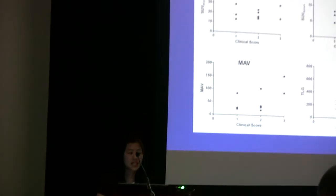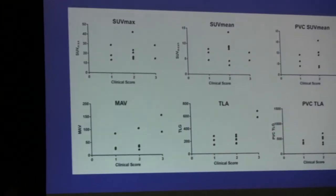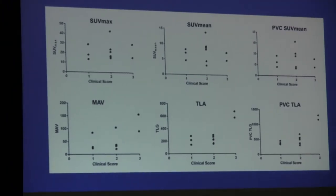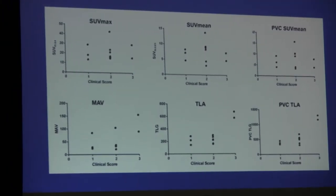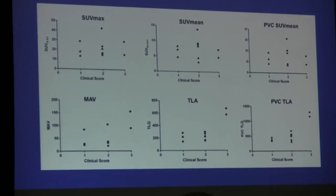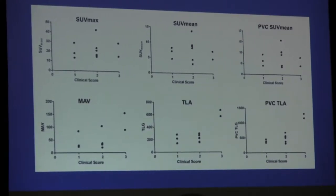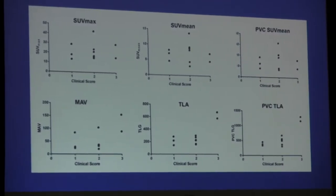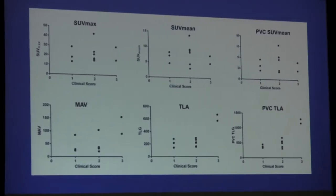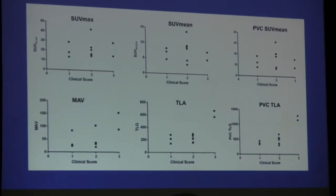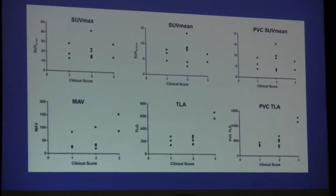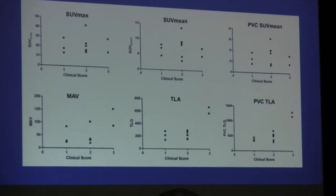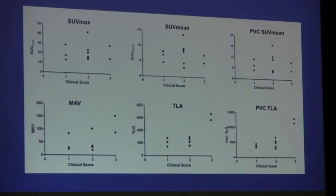Our findings can be further illustrated with the following graphs. As you can see, SUV max, SUV mean, and PVC SUV mean show no correlation at all. The x-axis is the clinical score as a basis of comparison, the y-axis is each quantification value, and each data point represents one patient. PBC TLA had the strongest correlation, followed by TLA, and lastly MAV, which was almost significant.